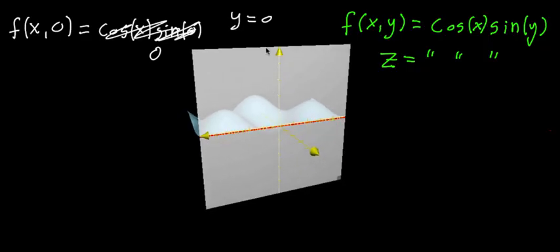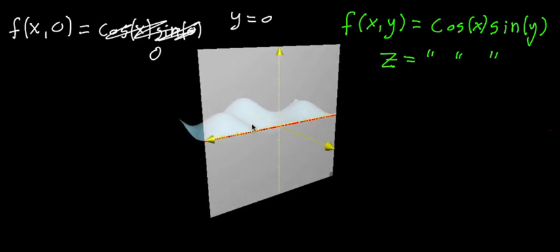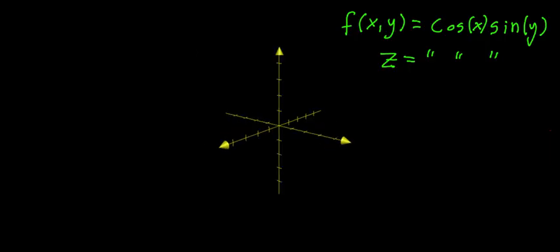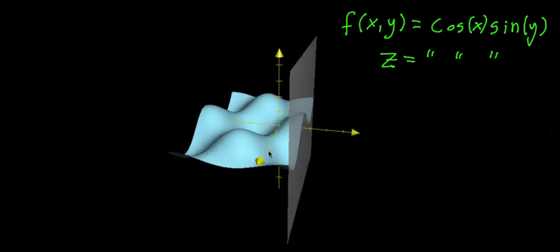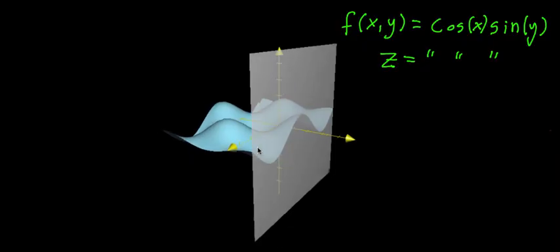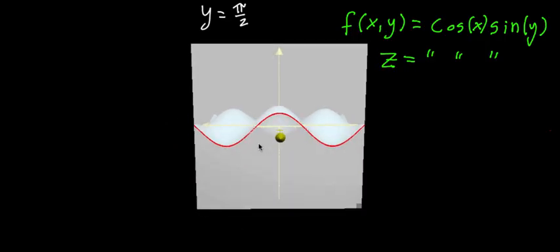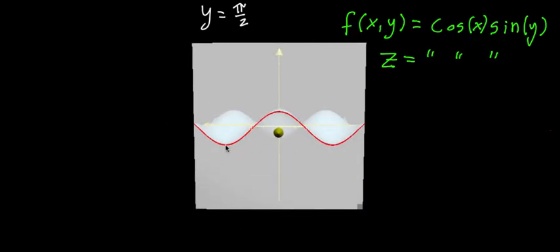But let's say that we did a different constant value of y. Rather than y equals zero, let's say that I cut things at some other value. So in this case what I've chosen is y is equal to pi halves. And it looks kind of like we've got a wave here. And it looks like a cosine wave. And you can probably see where this is going.